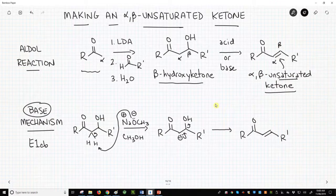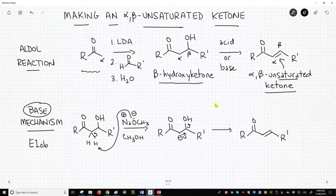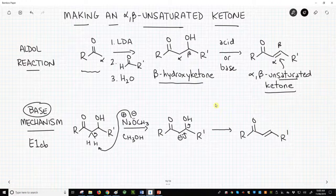I don't think it's important to know the details of the E1CB, but we should quickly recognize that this transformation is definitely some kind of elimination because we've made a pi bond. The beauty of this elimination is that we access this new unsaturated ketone, our alpha-beta unsaturated ketone.